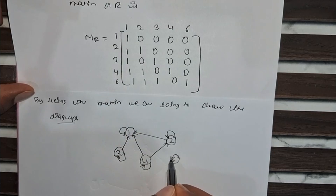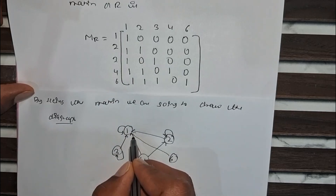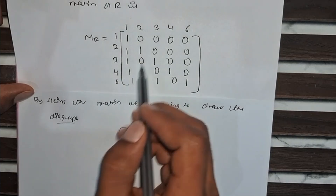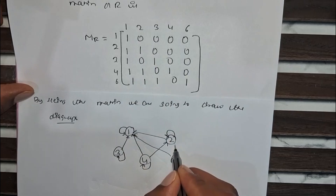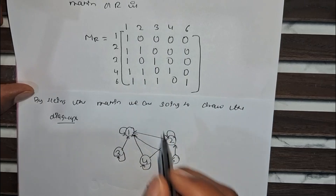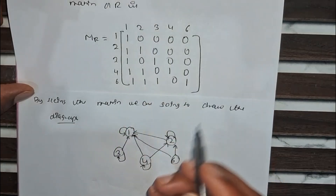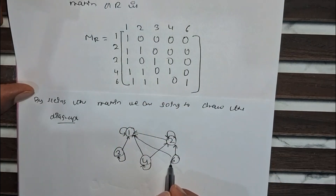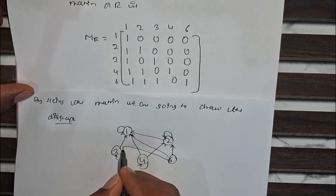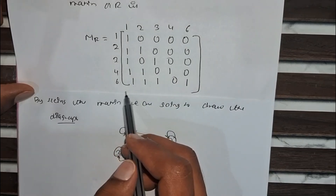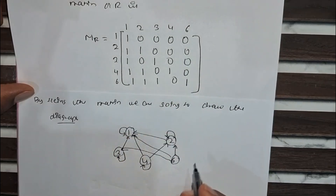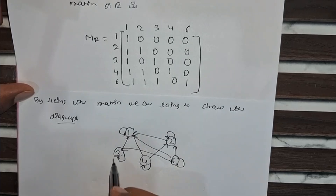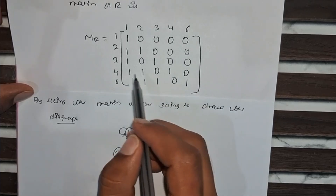4 to 1 is there, so it is directed to 1. Now 6 to 2 is there, so it is directed to 2. Now 6 to 3 is there, so it is directed to 3. Next, 6 to 6 is there, so it is directed to 6. This is our digraph, drawn by seeing this matrix.